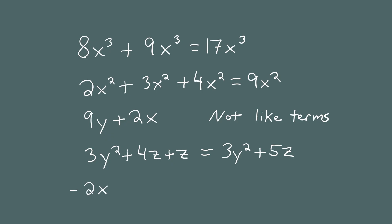Negative 2xy cubed minus 4xy cubed — these are two like terms, so we can combine them. By combining the numbers you get negative 6xy cubed.